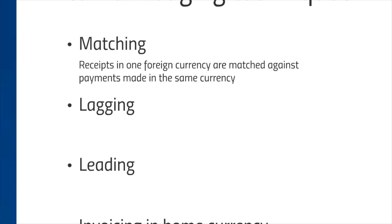Matching is where receipts in one foreign currency are matched against payments made in the same currency. From Carol's point of view, she happens to have an order of specialist cakes from a US company who like to pay in dollars. She has $12,000 coming in from this contract and needs $10,000 for her oven, so she aims to match the two up. The oven needs to be paid for in June, so she asks her customer to pay the $12,000 in June and uses most of that to pay for the oven — no currency conversion required.